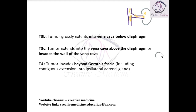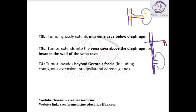In T3c, the tumor extends from the kidney into the renal vein, from there into the lower part of the vena cava, and then extends into the inferior vena cava above the diaphragm. If it even invades the walls of the vena cava, then it is T3c.